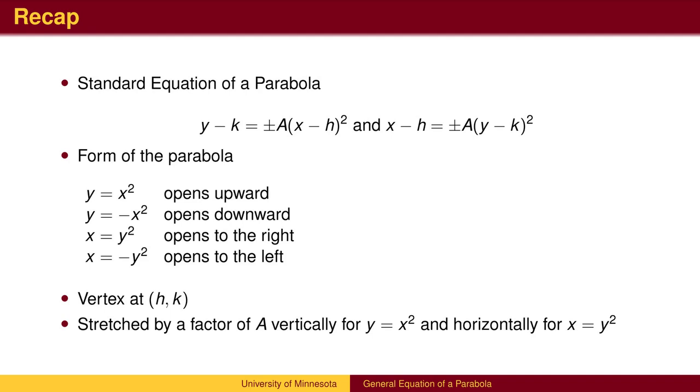To recap, the y equals x squared parabola points upward, the x equals y squared parabola points to the right. A negative sign will flip the graph so that y equals negative x squared points downward, and x equals negative y squared points to the left. Once you have determined the general form of the parabola, you can shift it so that the vertex is at (h,k). The factor of a will stretch the graph.